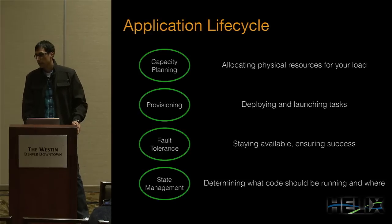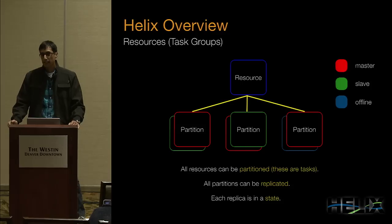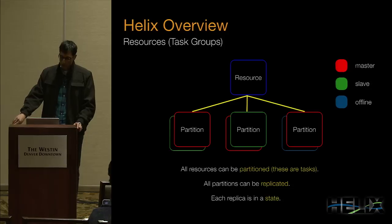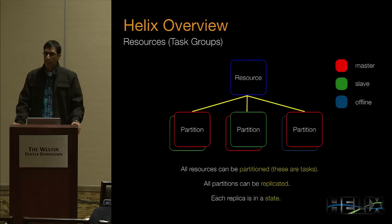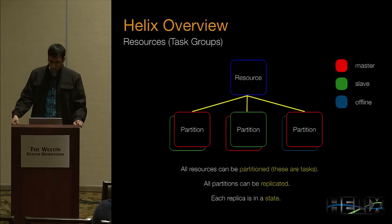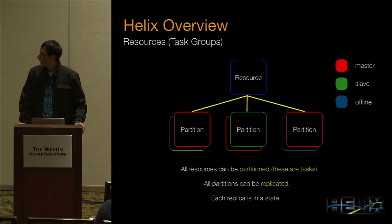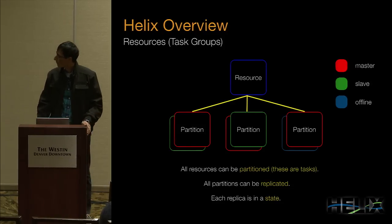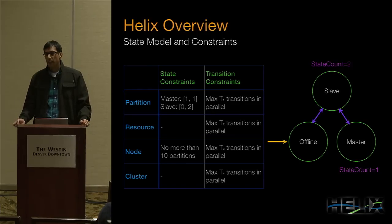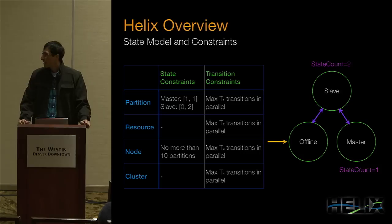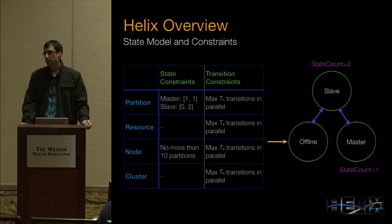The unifying concept in Helix is called a resource — a logical entity that you're distributing in your cluster, not to be confused with a physical resource. A resource can be partitioned, and a partition of a resource is similar to what we've been calling a task. In that sense, a resource is a group of tasks. All partitions can be replicated, and all replicas can have state associated with them — for example in a master-slave state model. The state model defines the states and possible transitions in your system, along with constraints such as exactly one replica being master per partition, or no more than ten partitions hosted on a node.